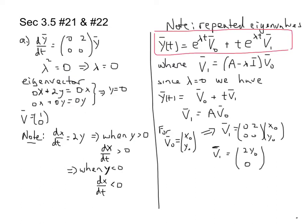V naught is an initial condition because when t is equal to zero at time zero, this term goes away. e to the lambda t is 1. And so y at time zero is v naught. v naught has to be the initial condition.